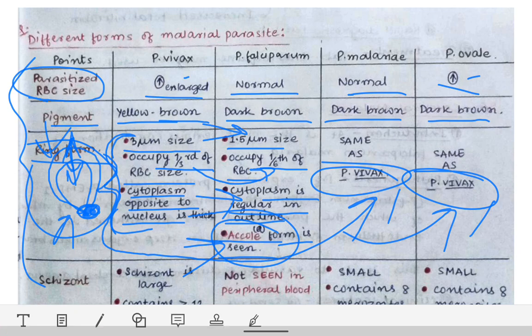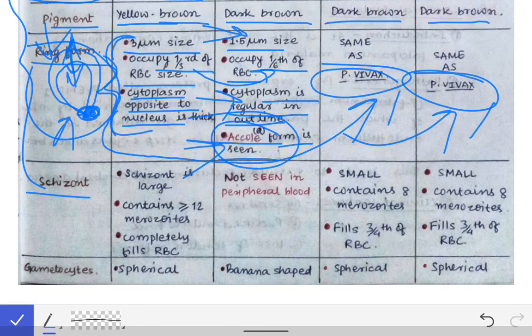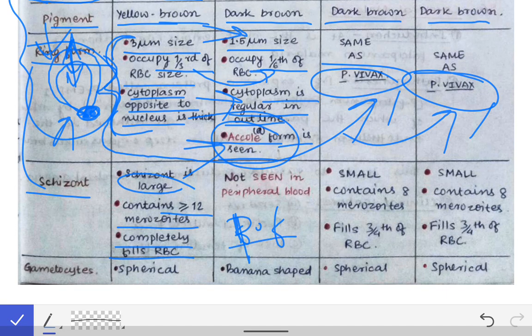Now moving to the schizont stage. In Plasmodium vivax the schizont is large and contains more than 12 merozoites, completely filling the RBC. In Plasmodium falciparum, schizonts are not seen in the peripheral blood because the RBCs are sequestered in the capillaries of deep organs such as the brain and liver, so they do not appear in peripheral blood.